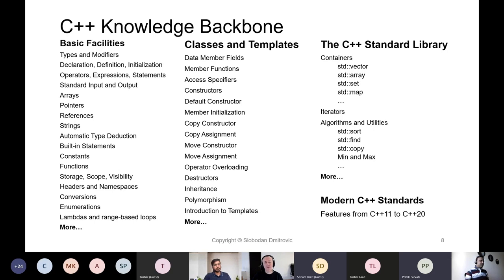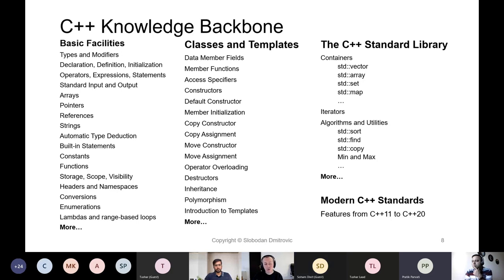First we start with types and modifiers, declarations, definitions, initializations, and so on. Then we progress to operators, which together with operands make expressions — and expressions ending with a semicolon make up a statement. We are building in complexity, expanding and building on the knowledge we gain as we learn along. We should also learn about references, strings, built-in statements, standard input and output, raw arrays, and raw pointers.